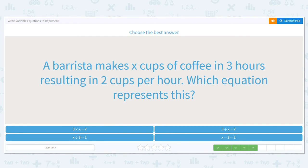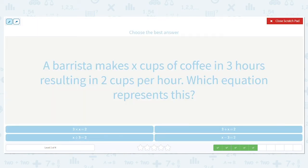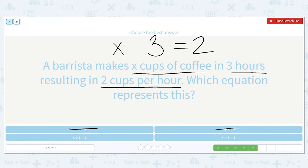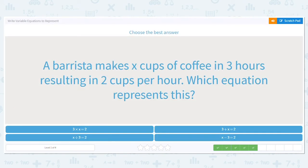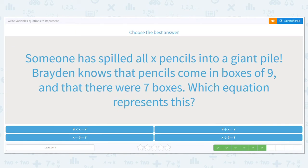So that was our answer. A barista makes x cups of coffee in three hours resulting in two cups per hour. Which equation best represents this? This is like our last problem. X cups of coffee in three hours and then there's a total of two cups per hour, so that means my answer is two. I have x cups over three hours. So again, my answer has to go lower, so I'm not adding and I'm not multiplying. So it's either x divided by three equals two or x minus three equals two. Well, we're splitting it up evenly, equally, so that means that we are dividing. So it's x divided by three equals two.